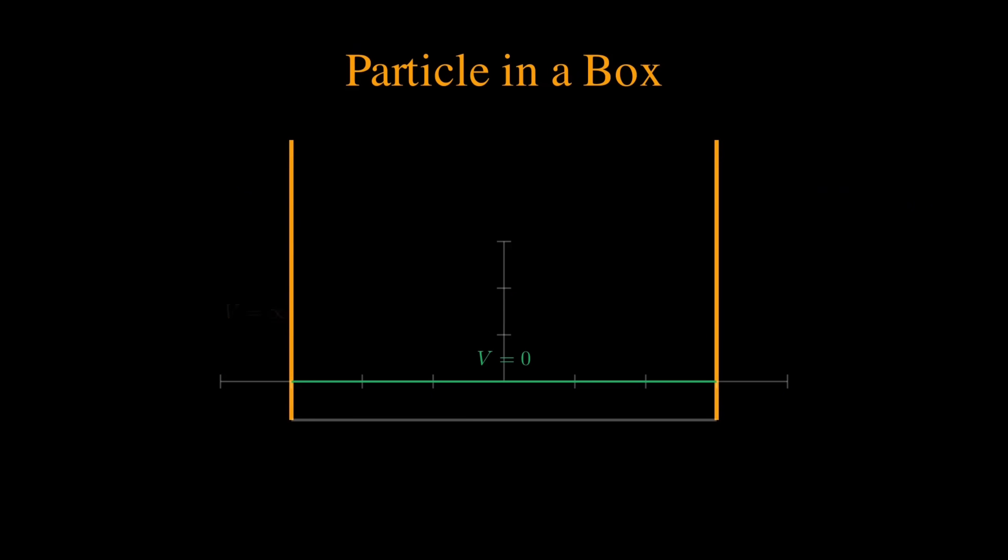Let's see this in action with a classic example: a particle trapped in a box. Imagine an electron confined between two walls it can't escape. The potential energy is zero inside the box and infinite at the walls. This simple setup reveals something profound about quantum mechanics. When we solve the Schrödinger equation for this box, we get standing wave solutions.